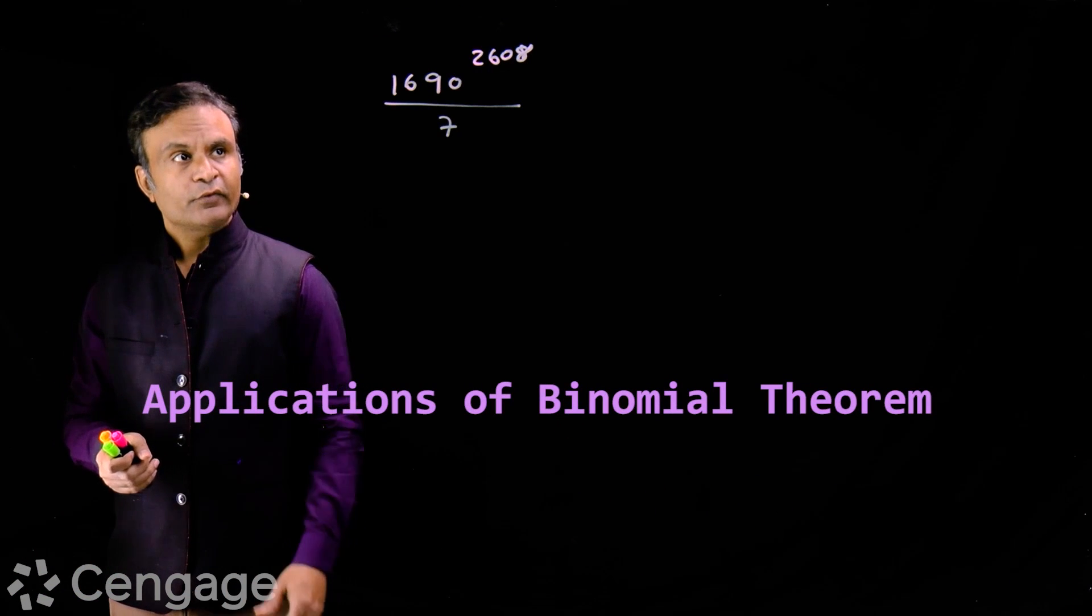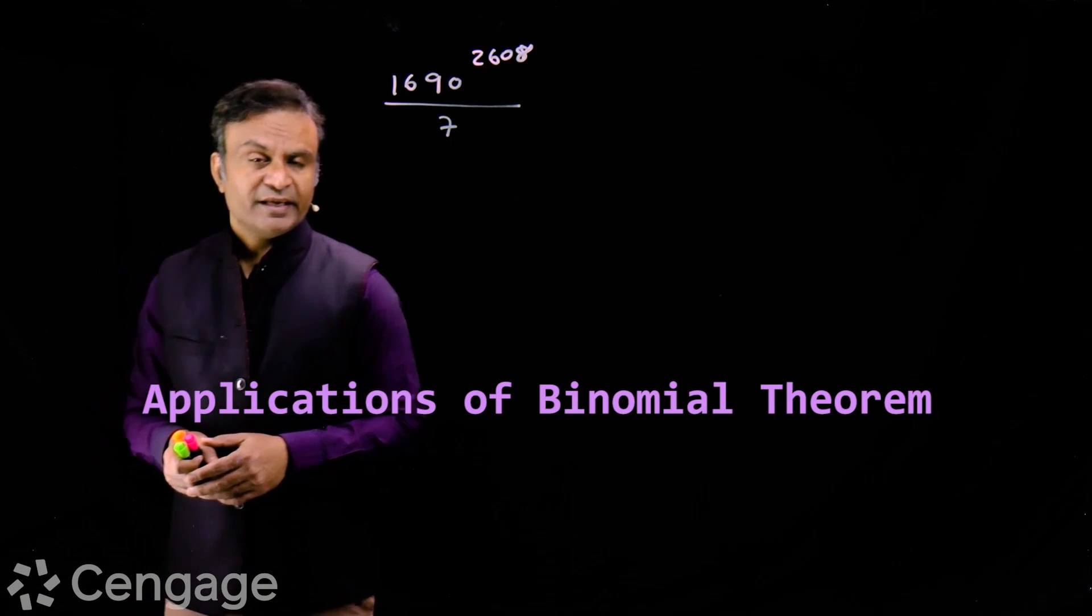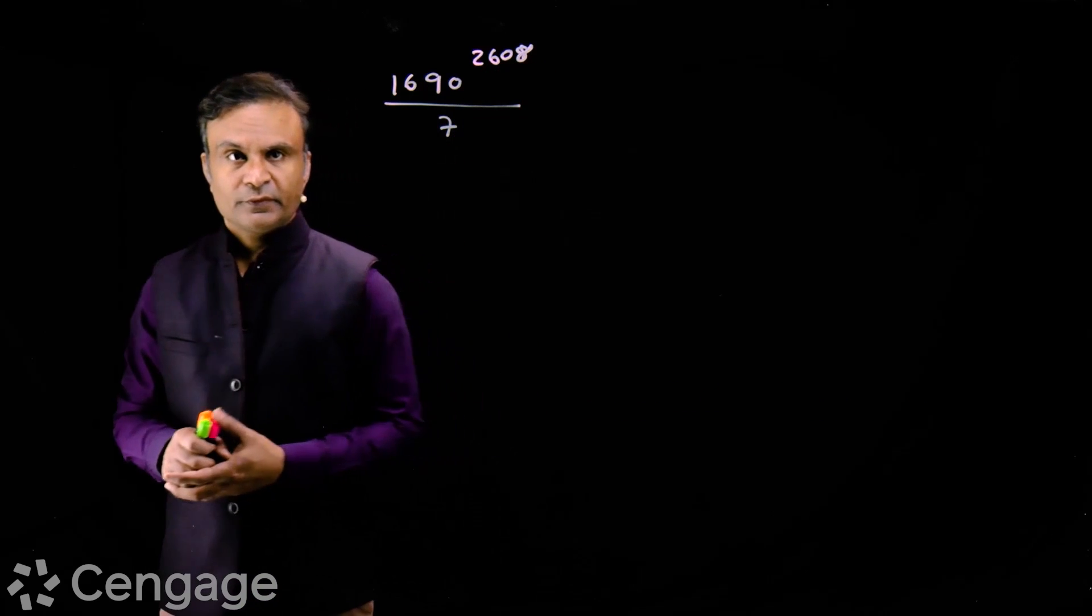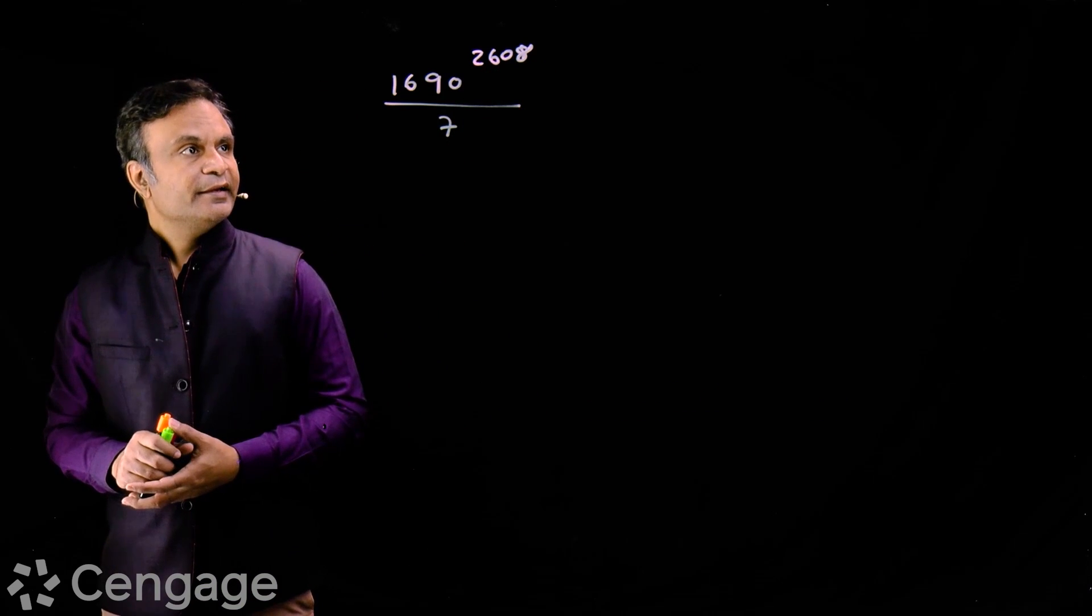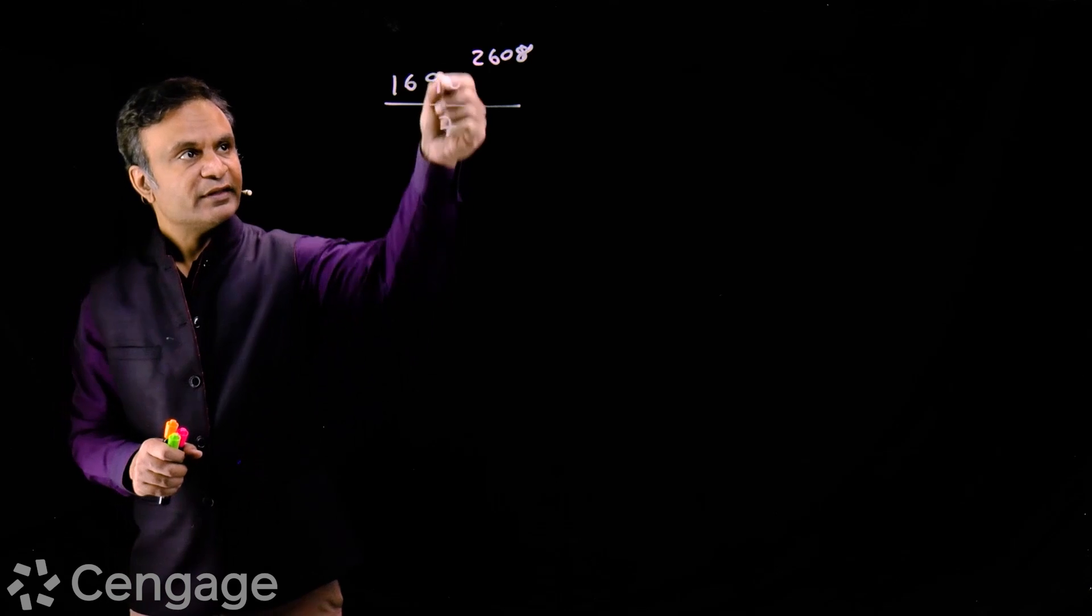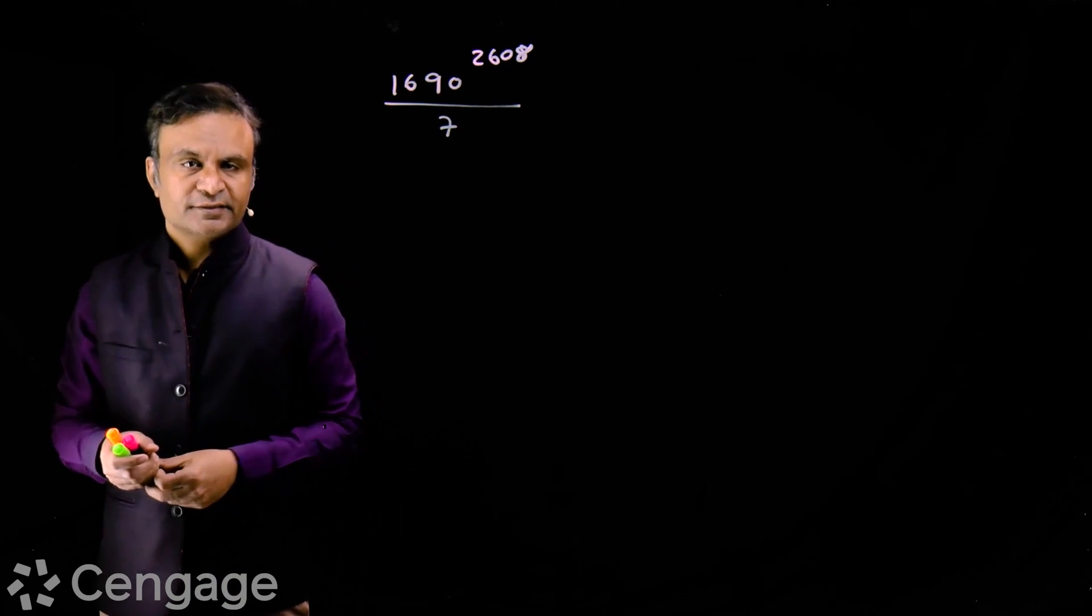Looking at this question, we have one big number with big base and big power. It's a very large number and we have to find the remainder when this number is divided by 7.